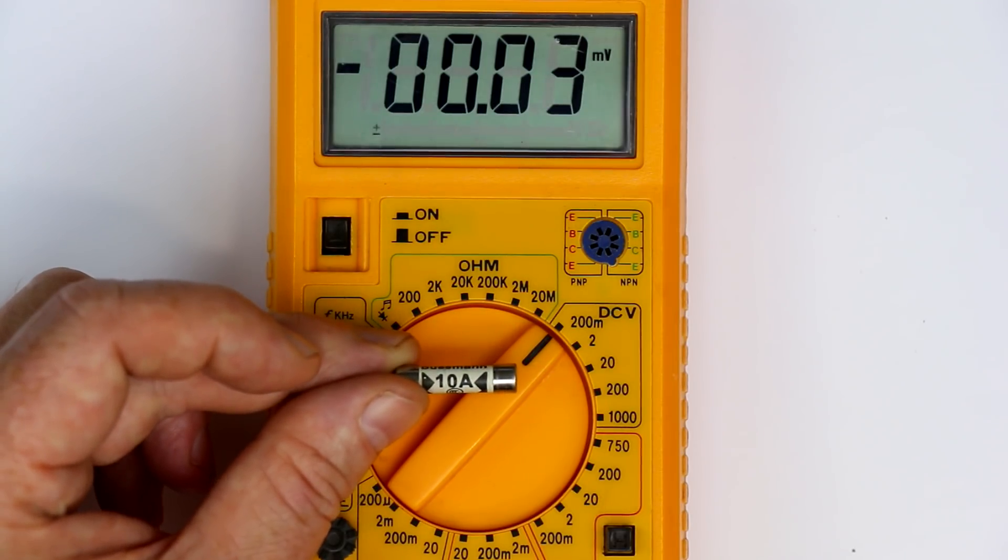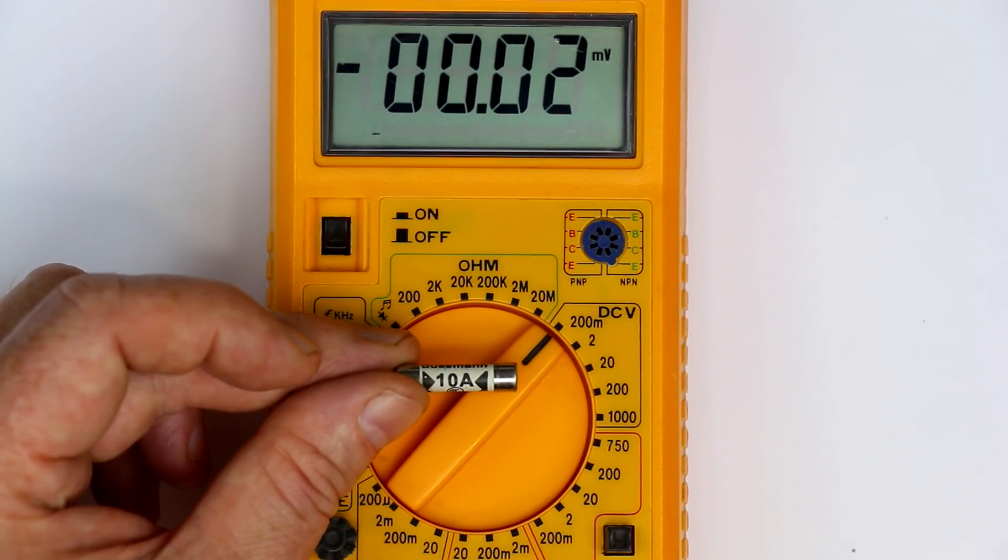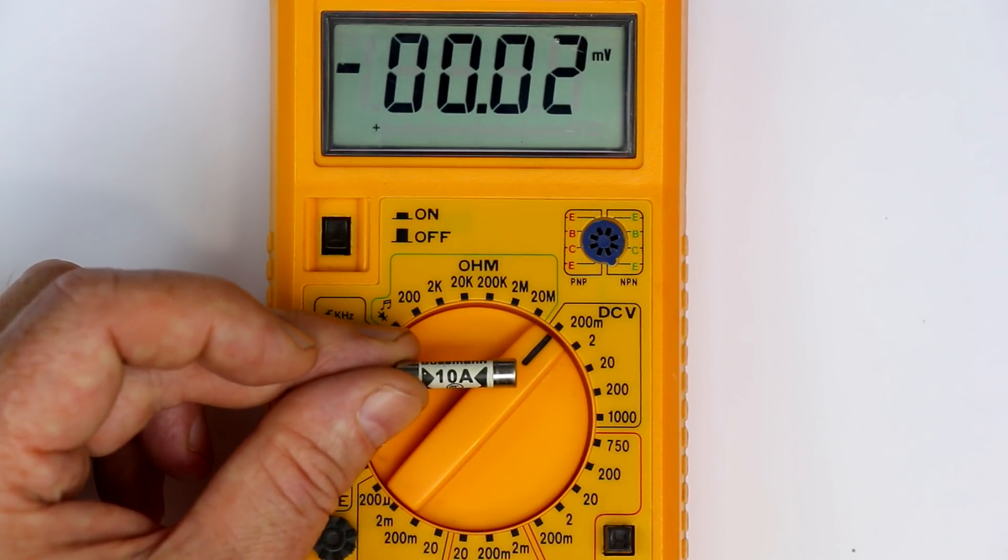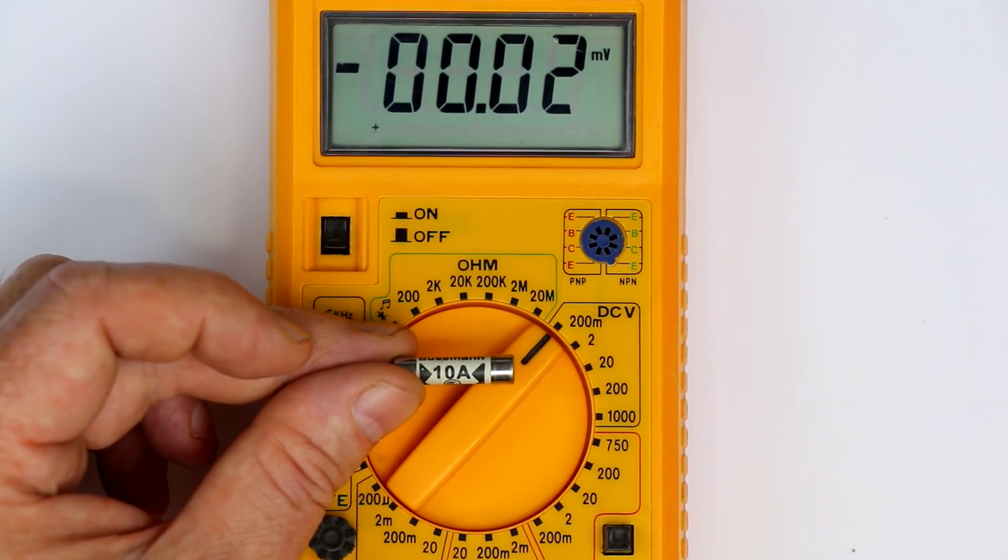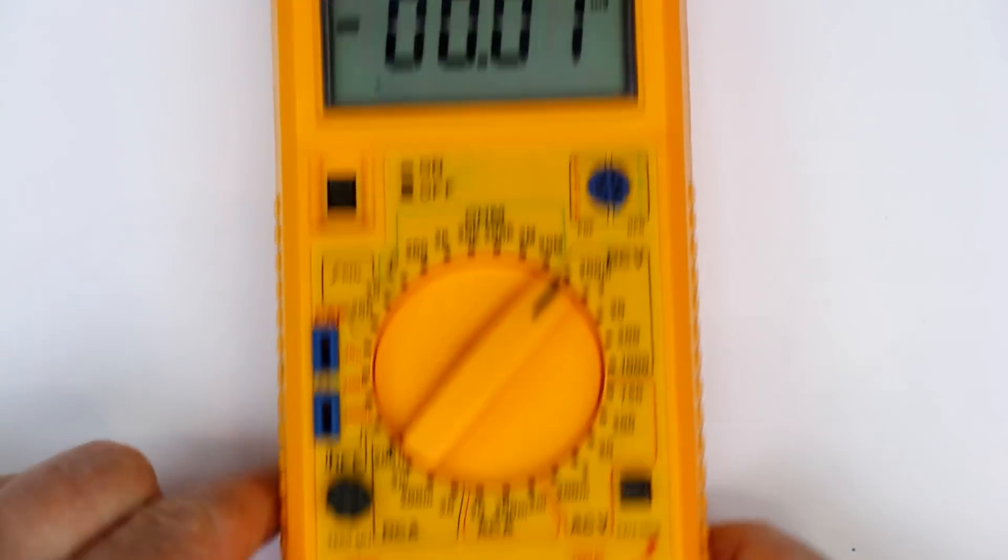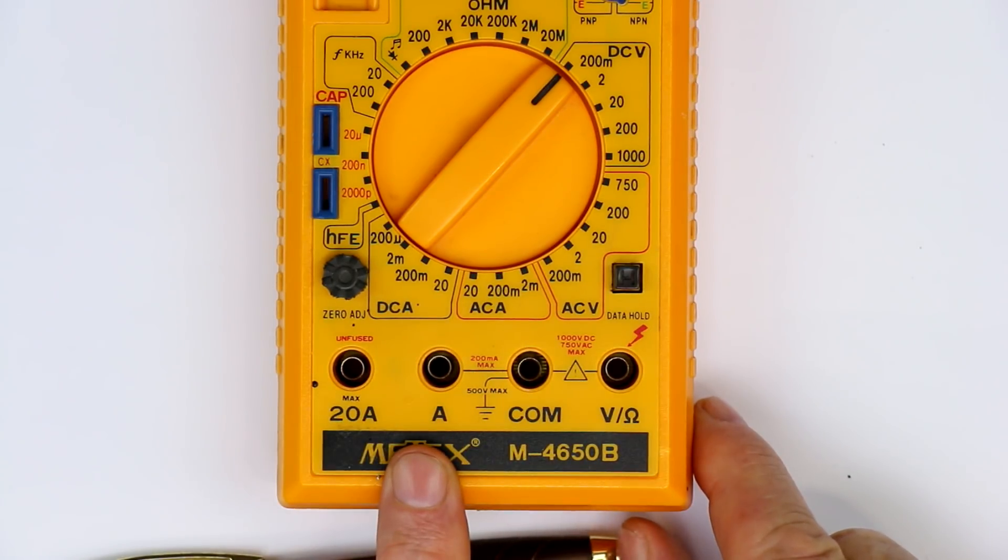HRC fuses—high rupture capability fuses—are used. So today, let's talk about the differences and what makes these HRC fuses much safer and more appropriate for the task of protecting, especially the amps range of your multimeter.